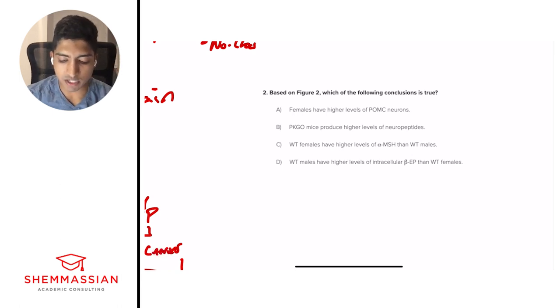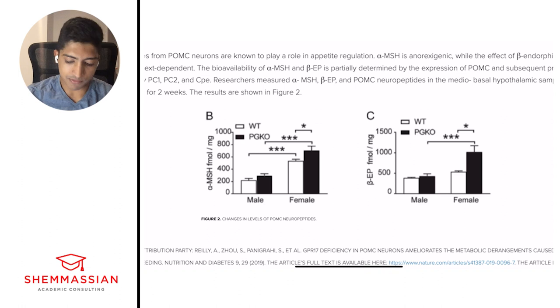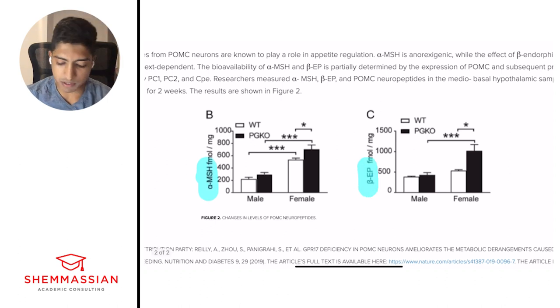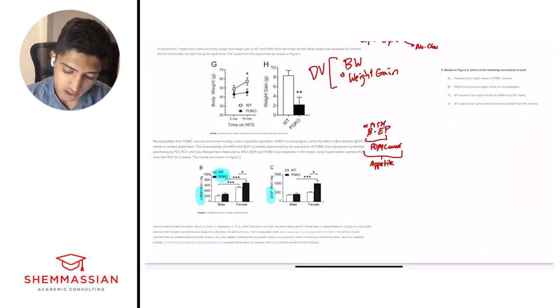Based on figure two, which of the following conclusions is true? A, females have higher levels of POMC neurons. B, PKGO mice produce higher levels of neuropeptides. C, wild-type females have higher levels of alpha MSH than wild-type males. Or D, wild-type males have higher levels of intracellular beta-EP than wild-type females. So again, this is exactly the type of question I was looking for, one that points us to a figure. So we're going to have to go back. And in this case, it wants us to go to figure two right here. And before we take a look, let's think of what it's looking at. Male and female on the x-axis and these two hormones, alpha MSH and beta-EP on the y-axis. And we have two different groups of these males and females. We have wild-type and PGKO. So with that, we have locked in on the big-picture understanding, and now we can look at our questions, our answer choices.